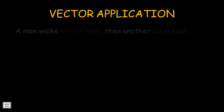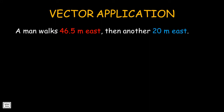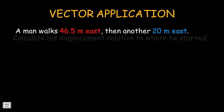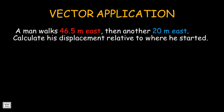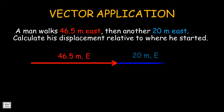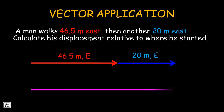Let's have an example. A man walks 46.5 meters east, then another 20 meters east. Calculate his displacement relative to where he started. This is the first vector, then the second vector. Notice that we are drawing them head to tail — the head of the first is attached to the tail of the second. The resultant vector goes from the tail of the first to the head of the last. Both vectors point towards east, so we can simply add their magnitudes.